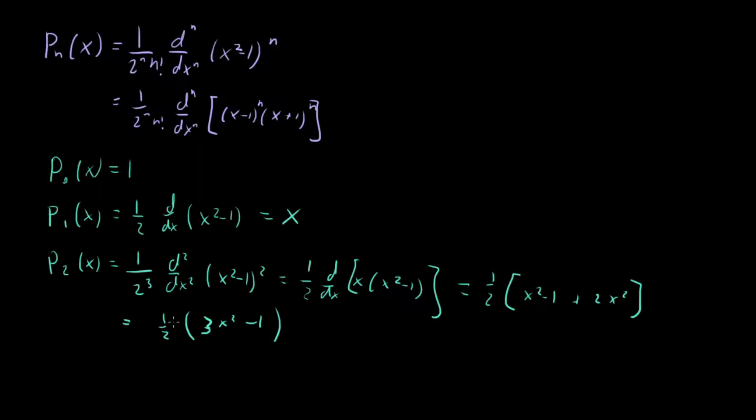You can keep doing this, doing it more for higher and higher n. For example, if you do it all out for P sub 3, what you get is 1/2 times (5x^3 - 3x). And keep going, so on and so forth. You'll get higher and higher stuff.